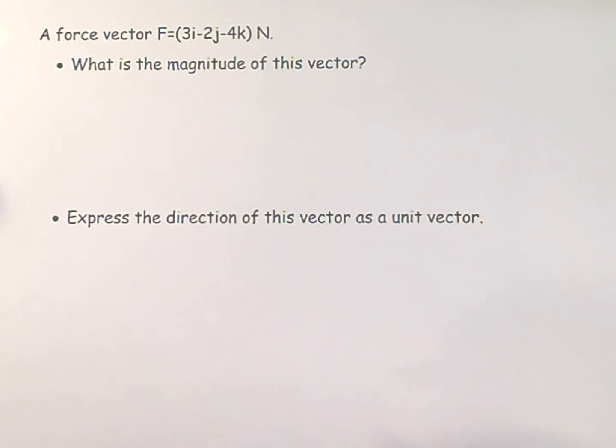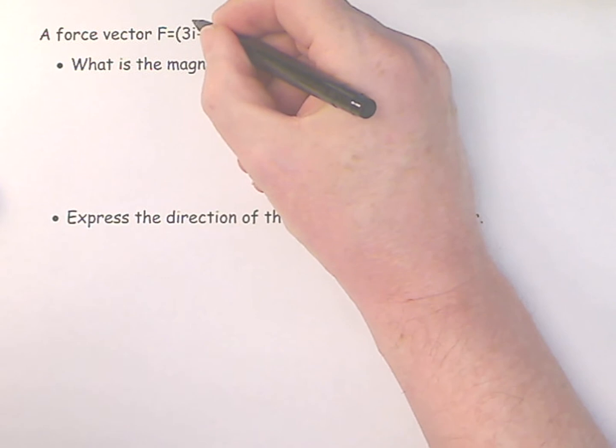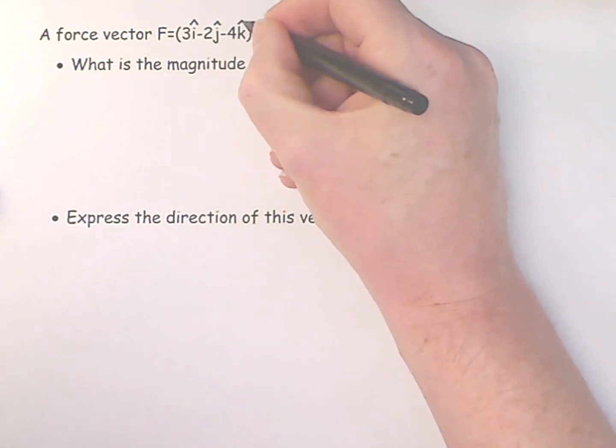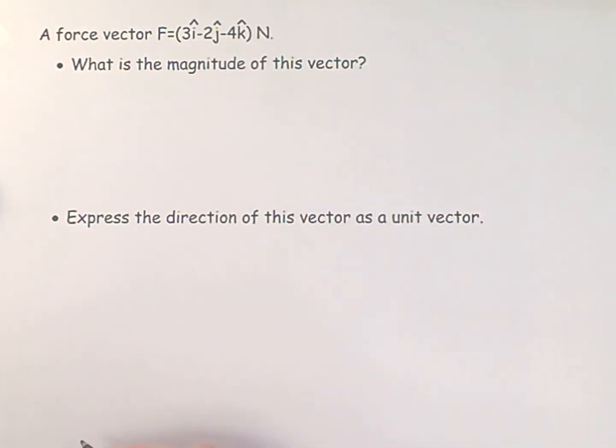This question comes in two parts. It says a force vector is 3i minus 2j minus 4k Newtons, and really these ijk should have little hats on top. In the first part it says what is the magnitude of this vector, and the second part is express the direction of this vector as a unit vector.